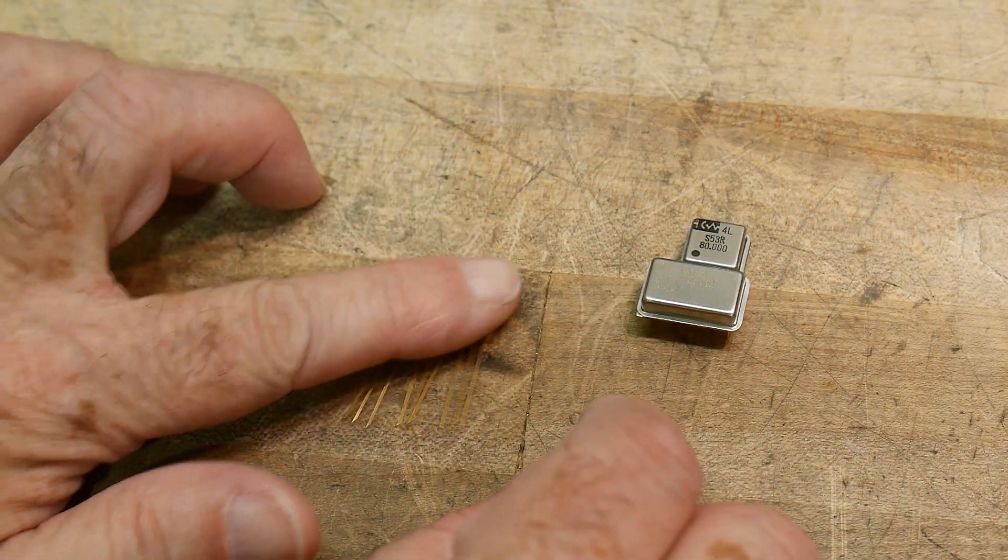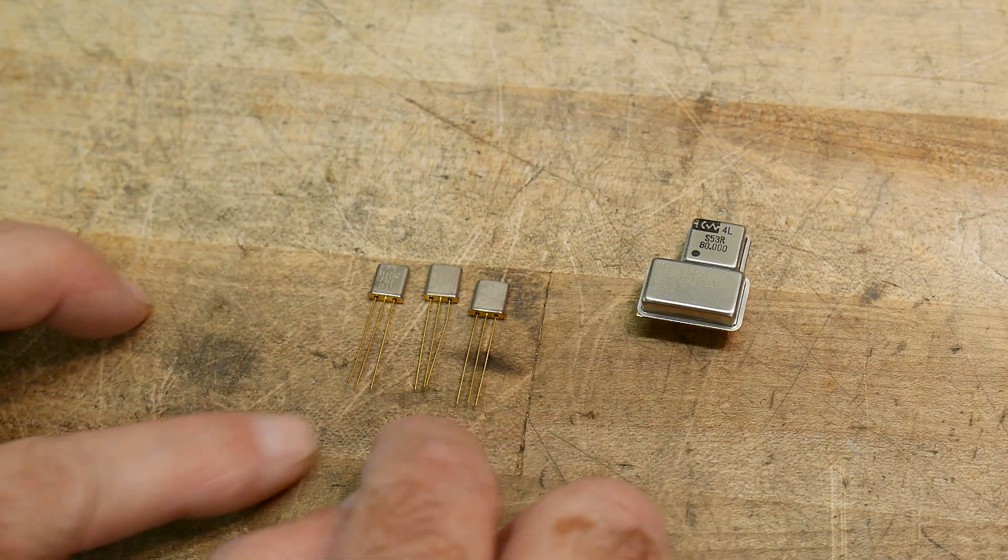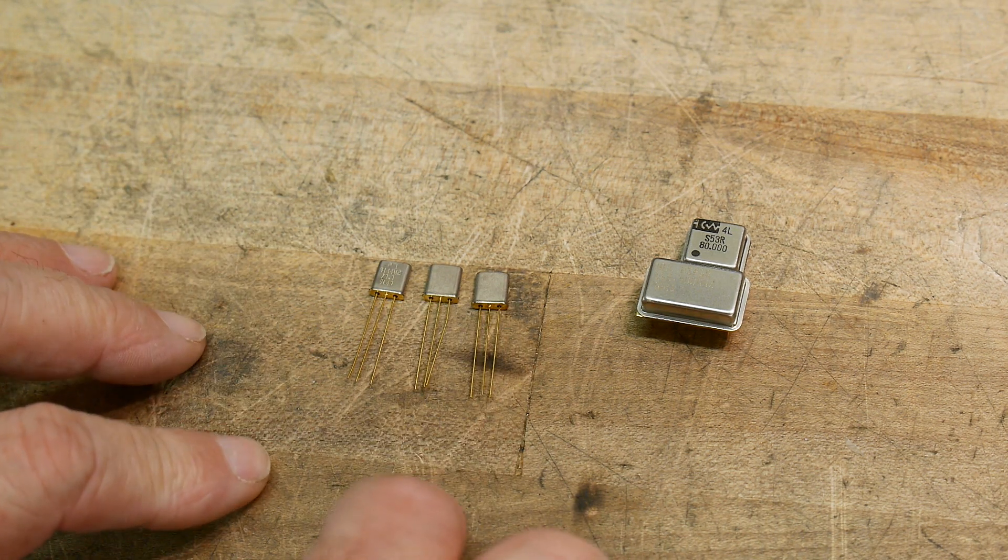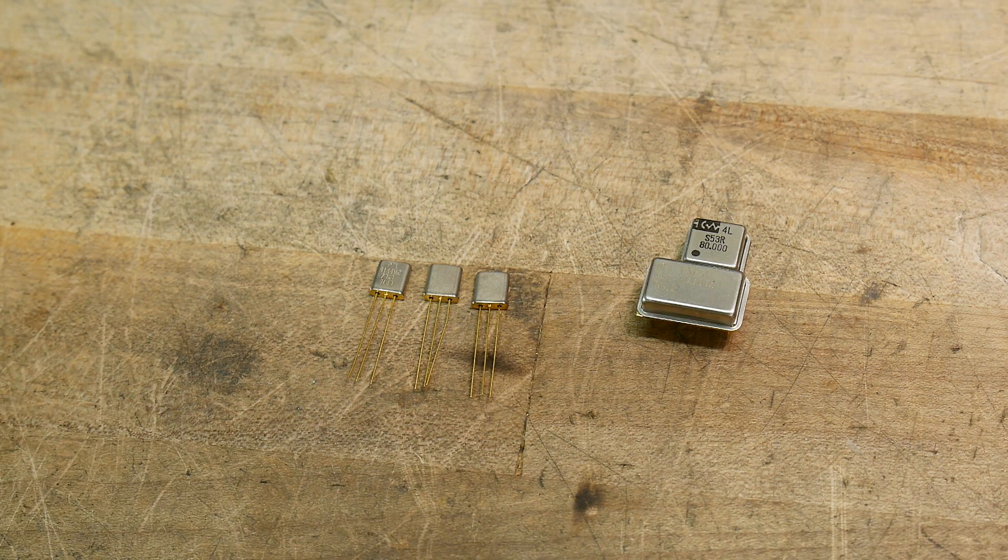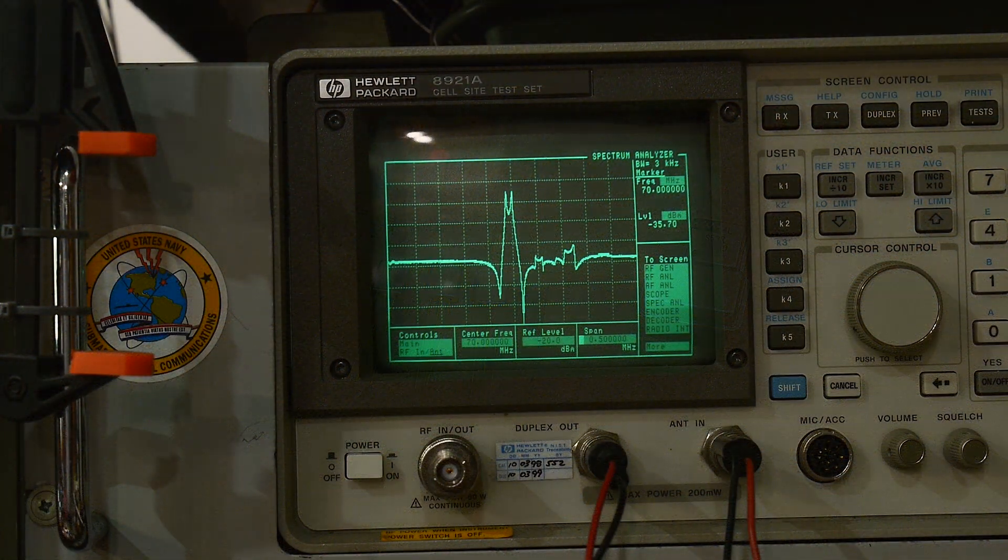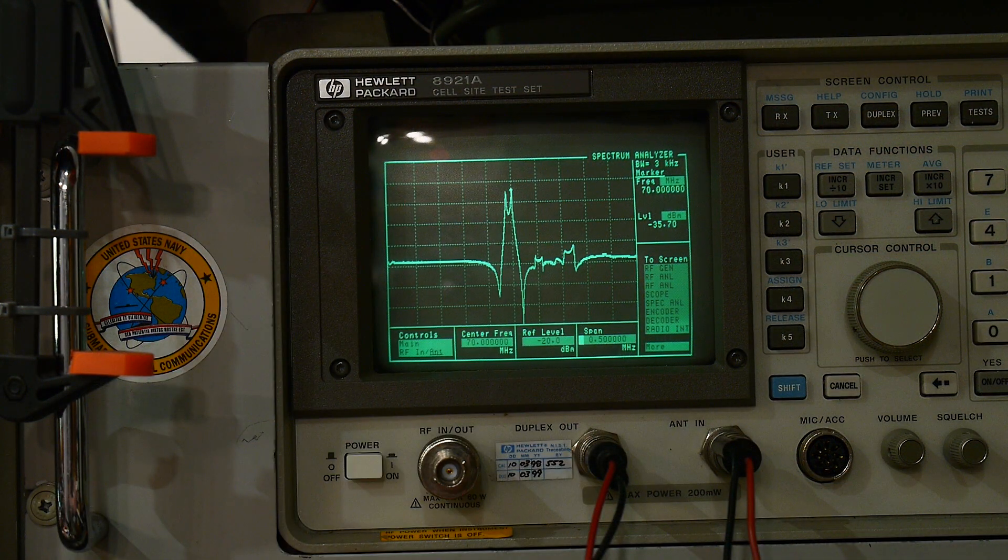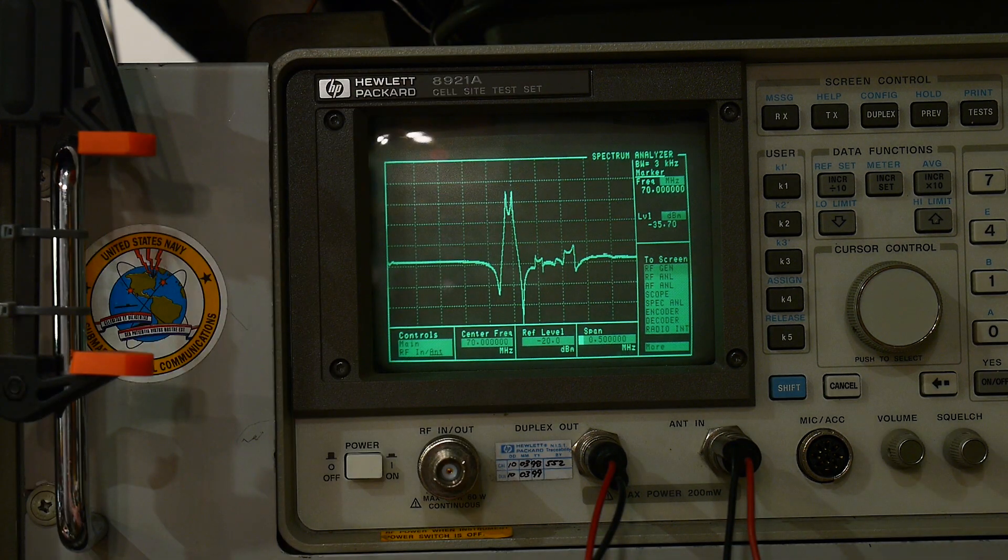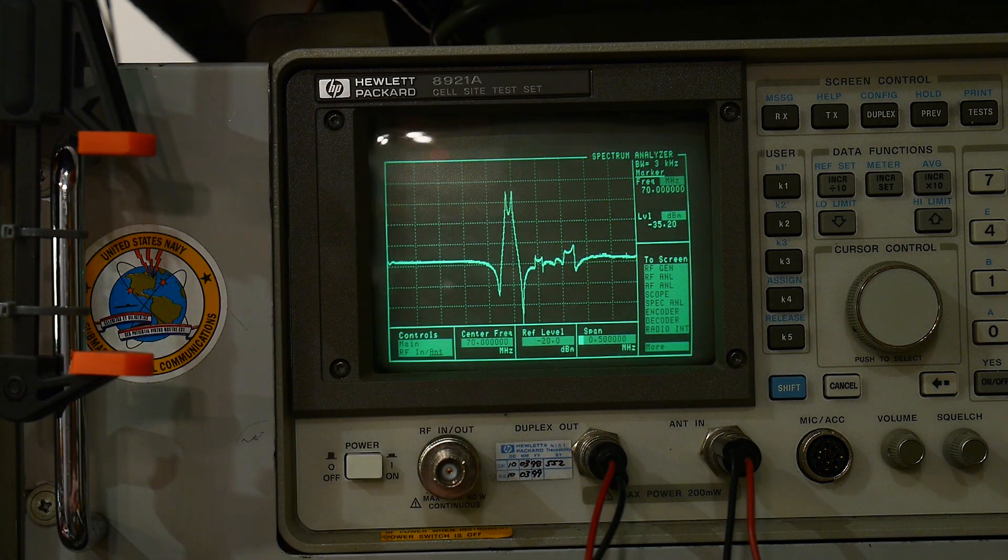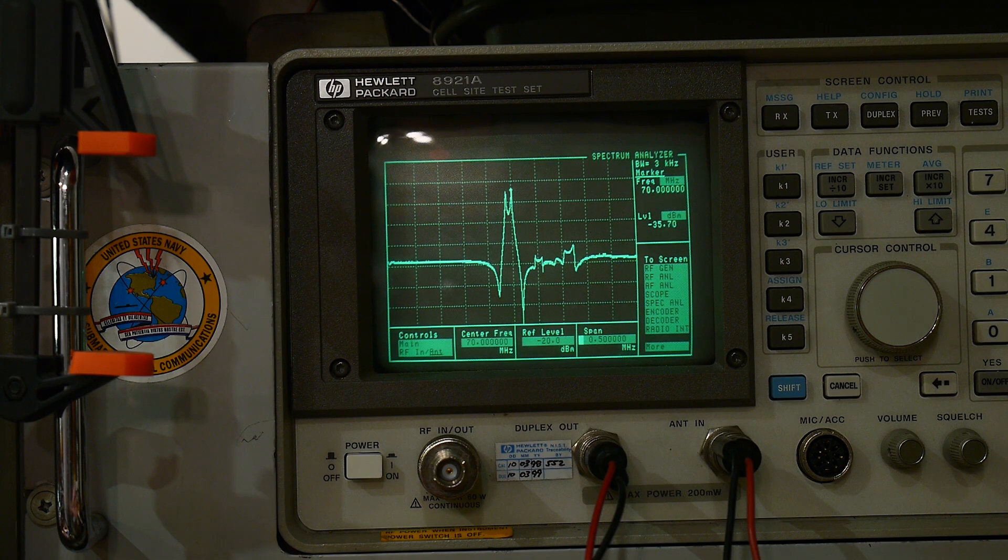So I think the first thing to do is see if the 70 megahertz is narrow or broad. All right, there we go. I got the little crystal hooked up and the filter, whatever it is. And that's what we got, it's centered on 70 megahertz.